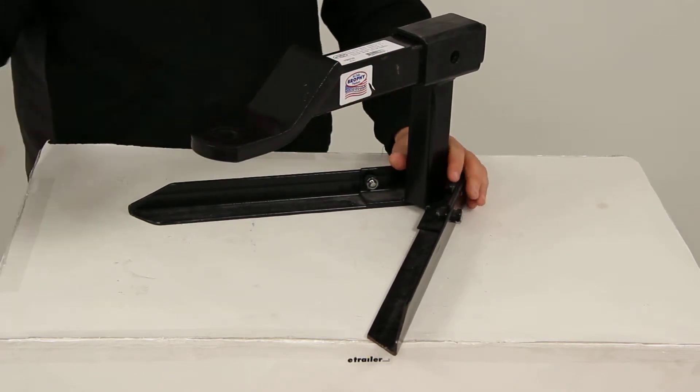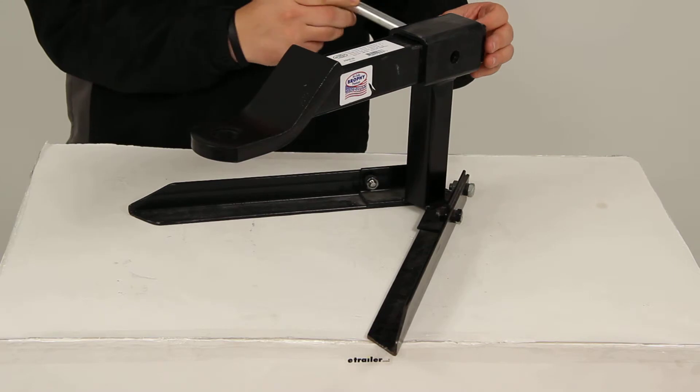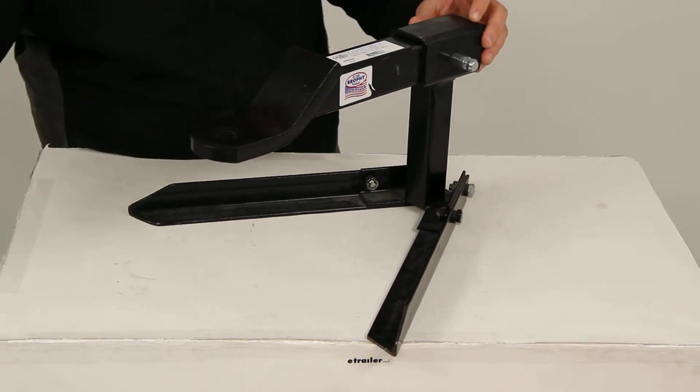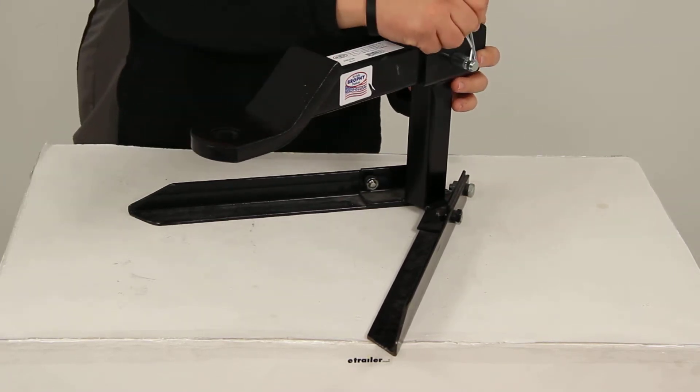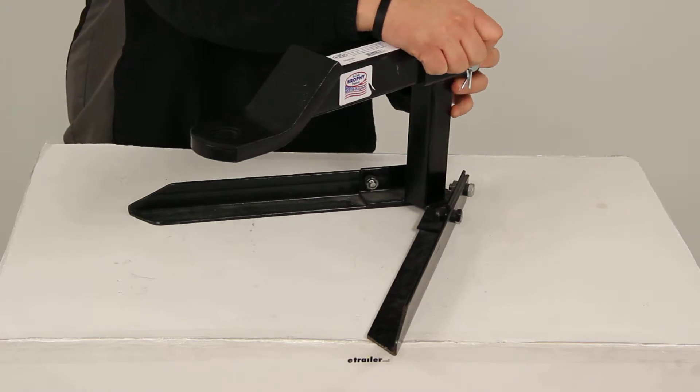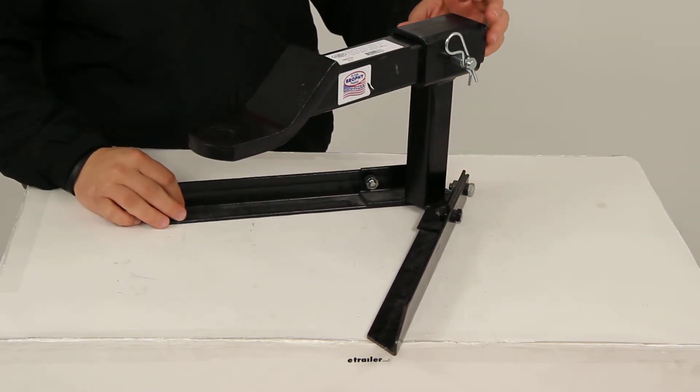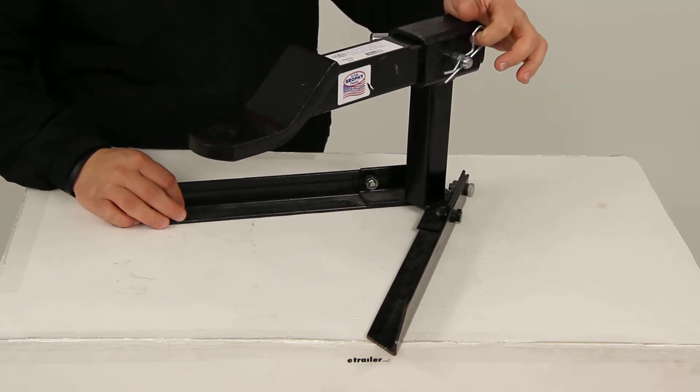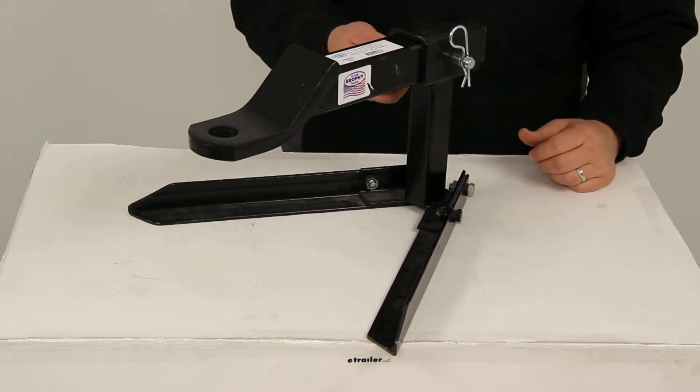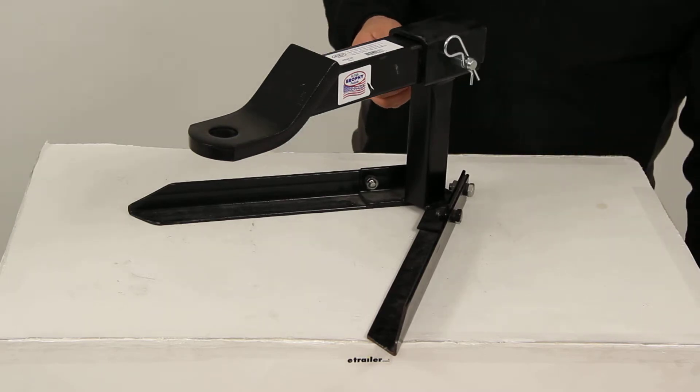You can then line up your pin hole and insert a 5/8 inch pin and clip or a hitch pin and lock. Those items are sold separately and you can refer to the ball mount's product page under related items to view those products, or go to our website and type in part number PC3 and it will refer you to this 5/8 inch pin that comes with a clip.